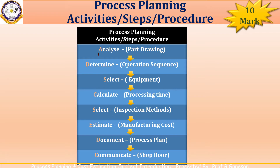The steps in process planning are: First step — Analysis. Second step — Determine. Third step — Select. Fourth step — Calculate. Fifth step — Select. Sixth step — Estimate. Seventh step — Document. Last step — Communicate.